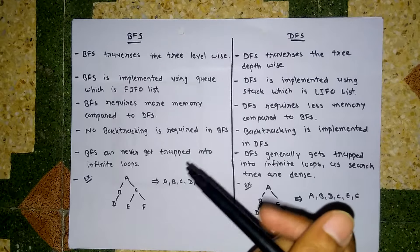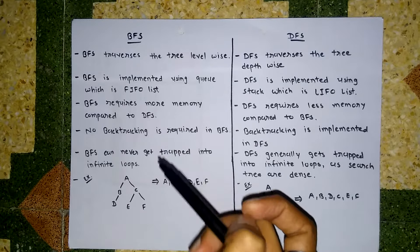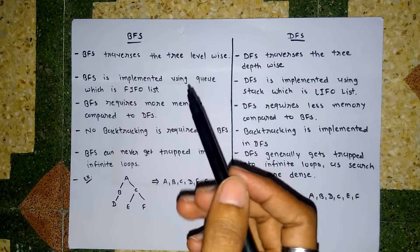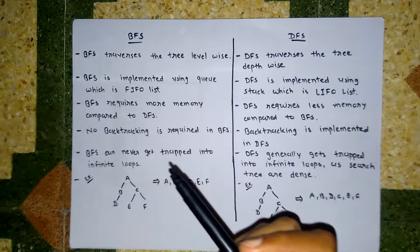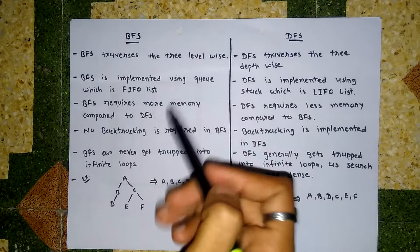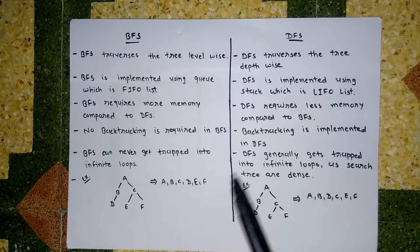The third difference is BFS requires more memory compared to DFS, and DFS requires less memory compared to BFS. In BFS we have to search for the goal node at every level, so we have to store nodes accordingly, and that requires more memory than DFS. Also, in BFS no backtracking is required, whereas in DFS backtracking is required.